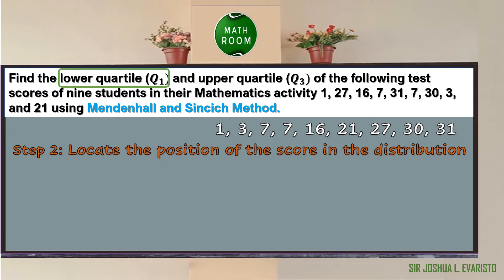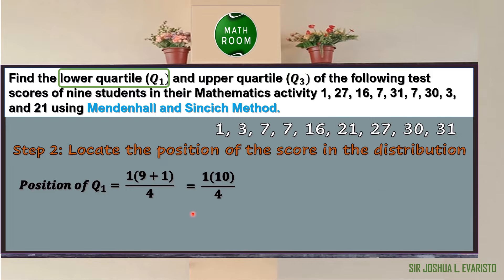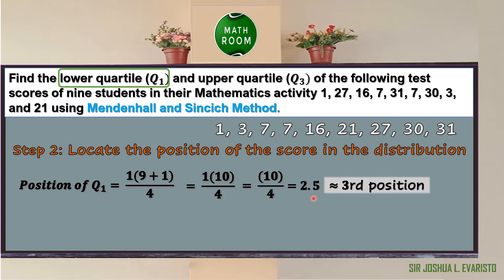Using the formula for quartile, the position of Q sub 1 = 1 × (9 + 1) / 4, since k = 1 and n = 9. Computing: 9 + 1 = 10, 10 × 1 = 10, 10 ÷ 4 = 2.5. The computed value 2.5 becomes 3 after rounding up.